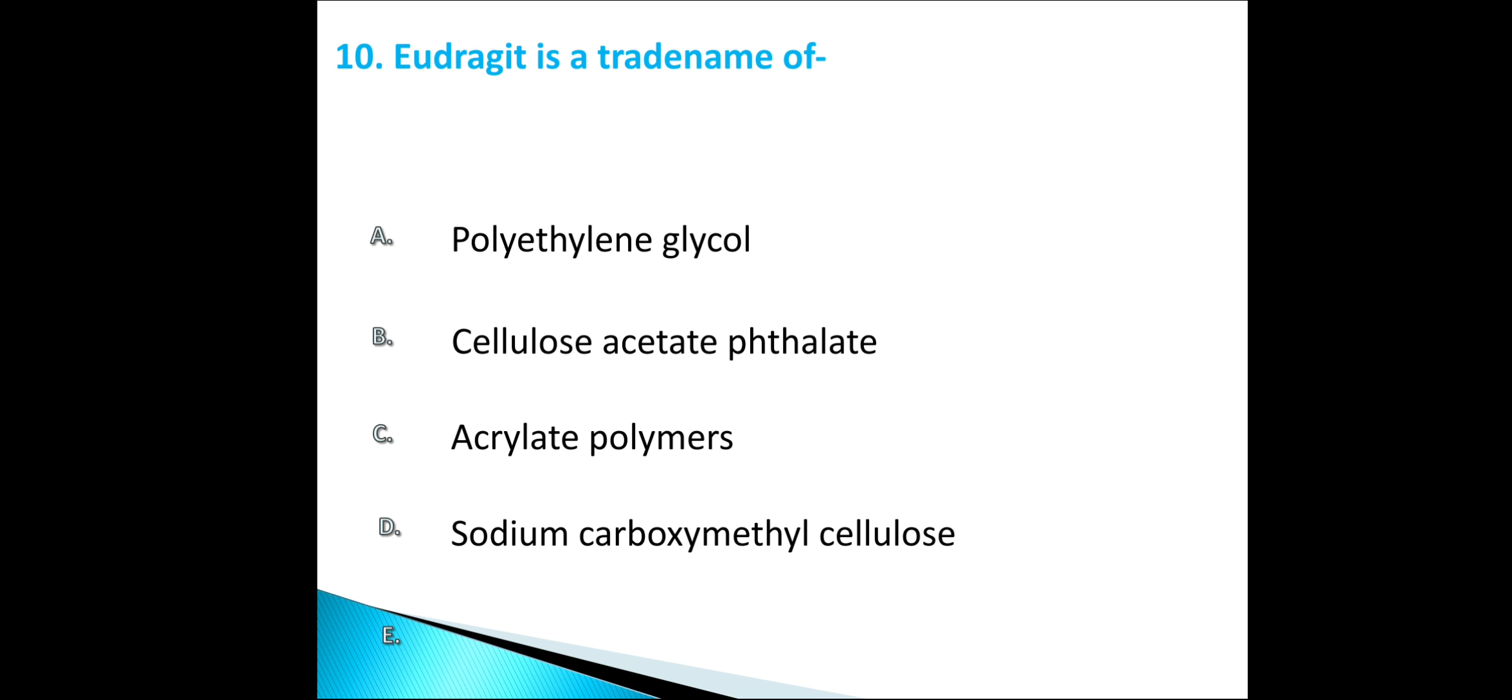Acrylate polymers are of different types. Eudragit L is soluble in pH 6. Eudragit S is generally soluble in pH 7. Eudragit E is the copolymer of dimethylaminoethyl methacrylate and other neutral methacrylic acid esters and they are soluble up to pH 5. Eudragit RS and RL are the copolymers of acrylic acid and methacrylic acid esters, they form delayed action film and their solubility does not depend on pH. So in this case, acrylate polymer is Eudragit.